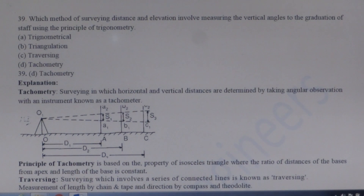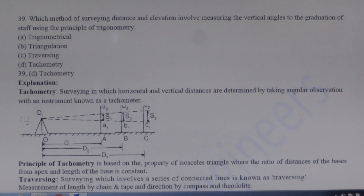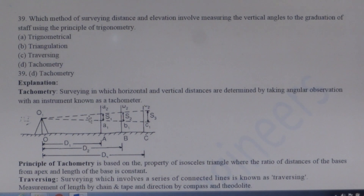Next question: Which method of surveying involves measuring the vertical angles and distances using the principle of trigonometry? Tacheometry is the branch of surveying in which horizontal and vertical distances are determined by taking angular observations with an instrument known as a tacheometer. The principle of tacheometry is based on the property of isosceles triangles, where the ratio of the distance of the base from the apex to the length of the base is constant — built on the principle of similarity.